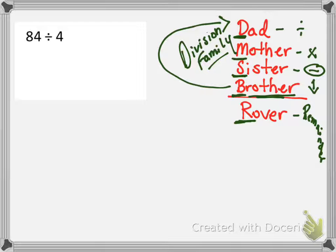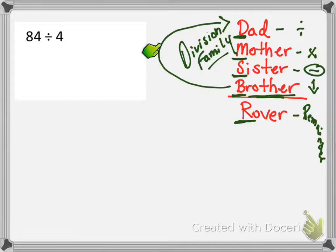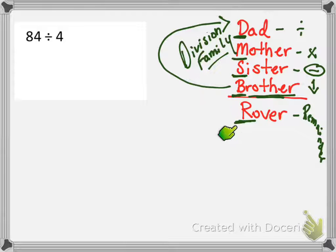So the steps we're going to follow: first we divide, then we multiply, then we subtract, then we bring down. But we might have to repeat all the steps again because we might have to bring down again. After we bring down, we might have to go back to division, then multiply, then subtract, then bring down. If there's no other numbers to bring down, then we might have a remainder — the family dog in this division family.